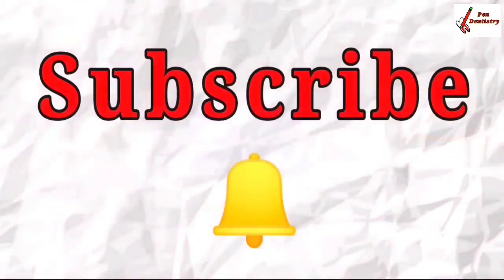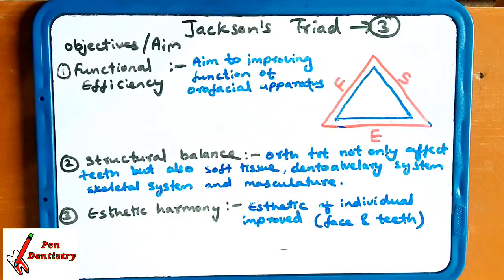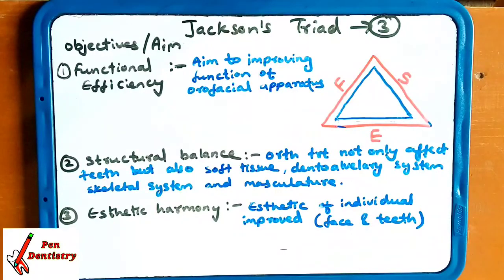Without further delay, let's get started. Jackson Triad has given the three aims or objectives of orthodontics to fulfill the orthodontic treatment. Jackson Triad has given three things.